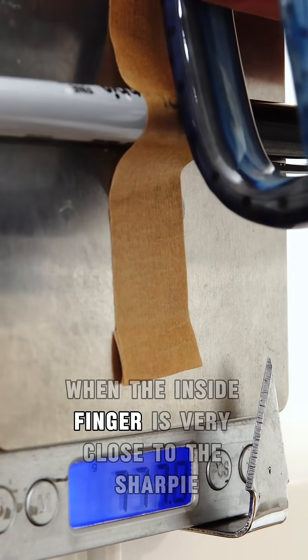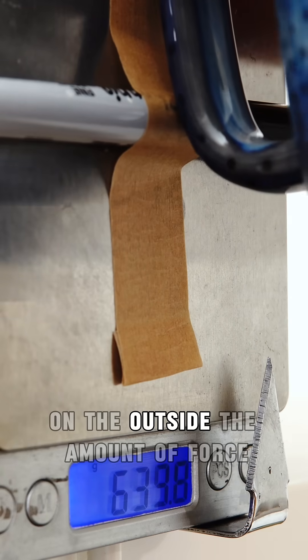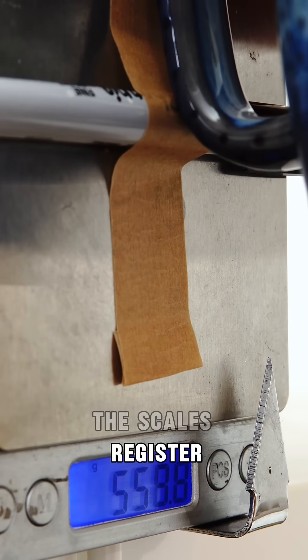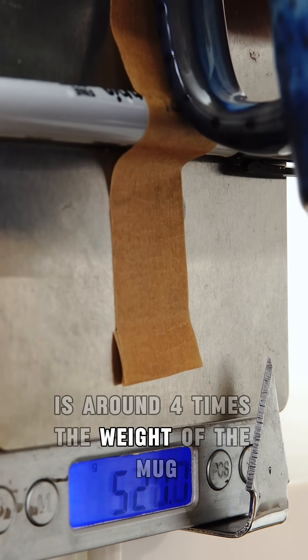You can see that when the inside finger is very close to the sharpie on the outside, the amount of force the scales register is around four times the weight of the mug.